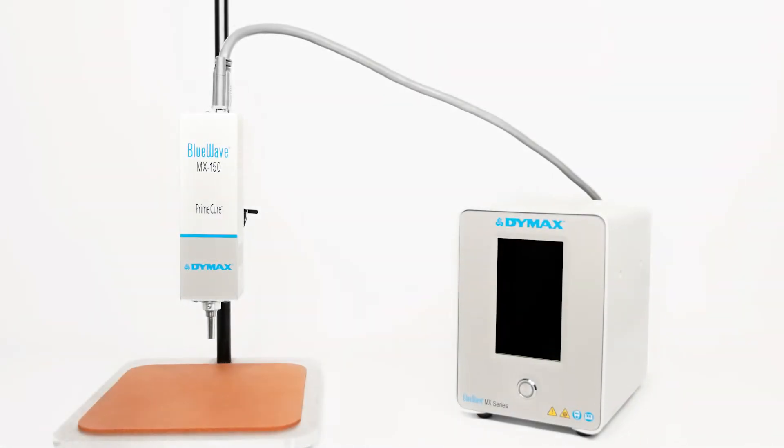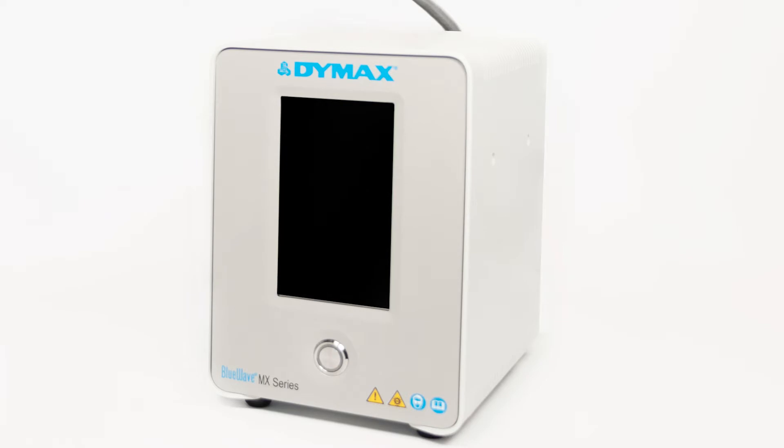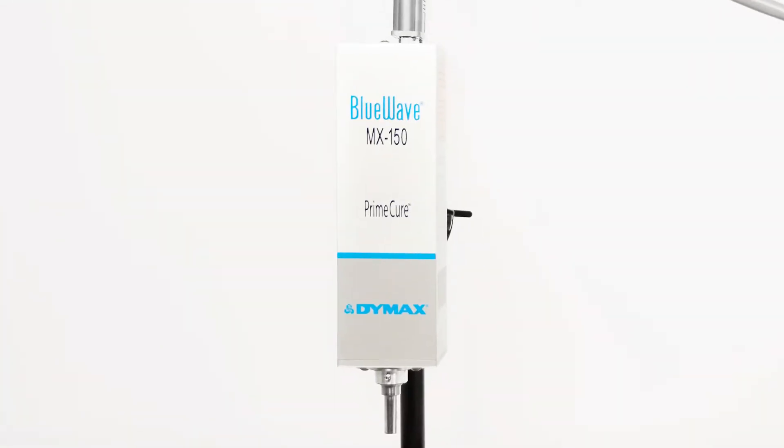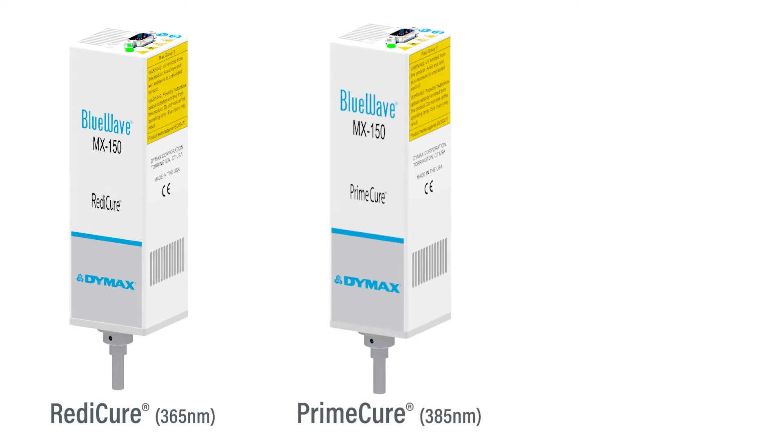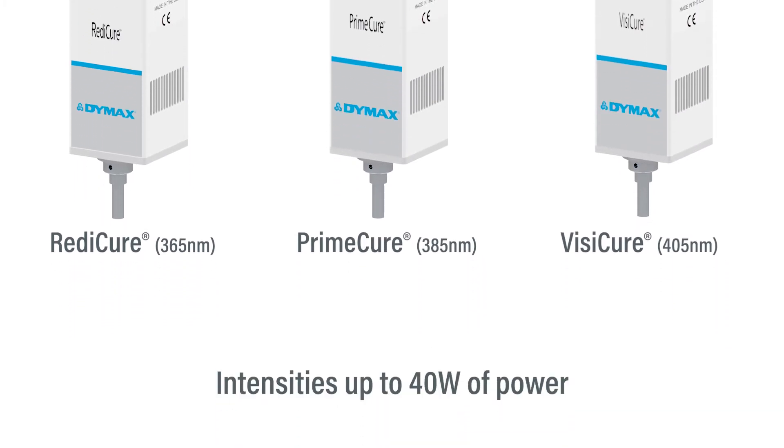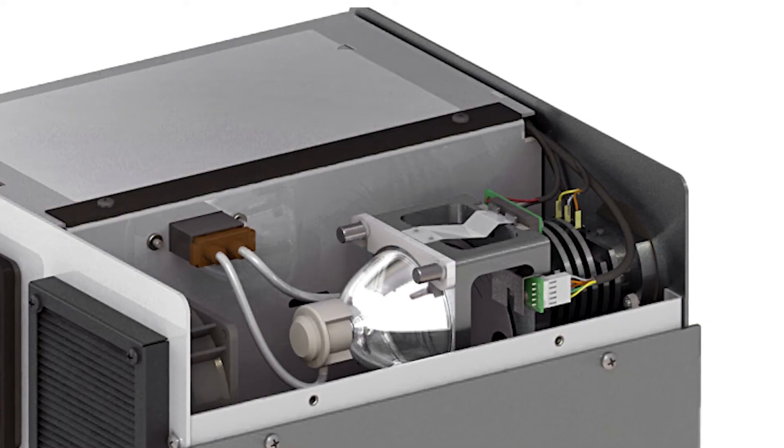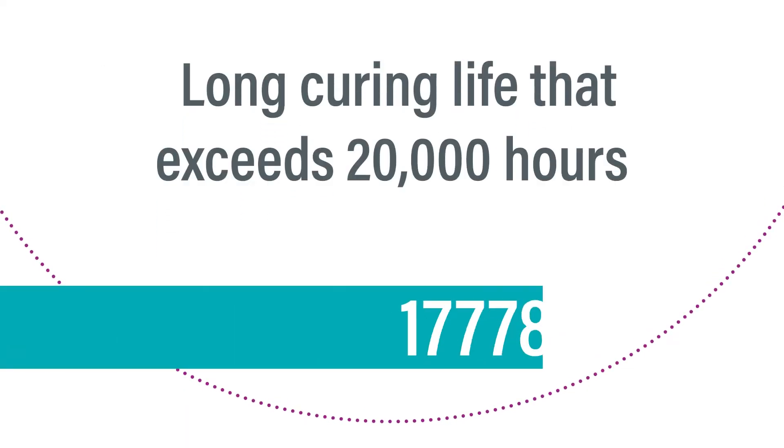The BlueWave MX150 LED Spot Curing System is comprised of a controller and a high-intensity LED emitter. Emitters are available in 365, 385, and 405 nanometer wavelengths and offer intensities up to 40 watts of power. Curing energy is created using an LED chip instead of conventional metal halide or mercury arc lamps for a long curing life that exceeds 20,000 hours.